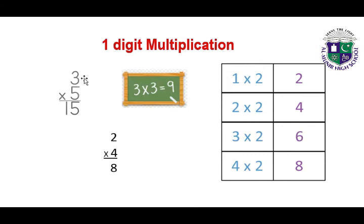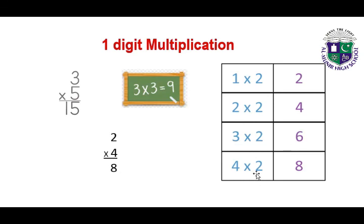Five ones are five, five twos are ten, five threes are fifteen. Three multiply by three — three threes are nine. Two multiply by four means four times two — four ones are four, four twos are eight. One multiply by two is two. Two multiply by two is four. Three multiply by two — three ones are three, three twos are six. Four multiply by two — four ones are four, four twos are eight.